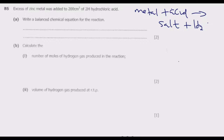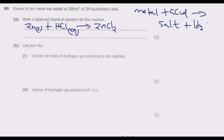Let us now write this equation. We have zinc, which is a solid, reacting with hydrochloric acid, which is aqueous, to produce zinc chloride, which is aqueous, plus hydrogen gas.